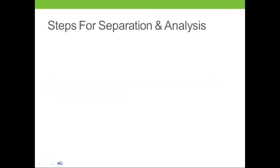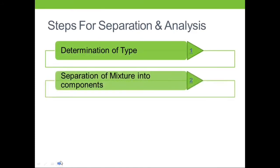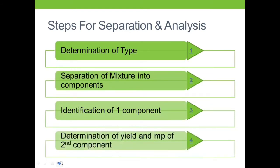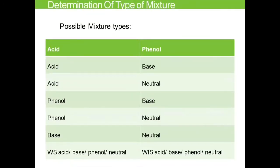Let us now look at the steps for the method of separation. This involves: first, determination of type — meaning the chemical nature of each component; then separation of the mixture into its components; followed by identification of one component; and finally determination of the yield and melting point of the second component. In this video, we will focus only on the determination of type and separation.